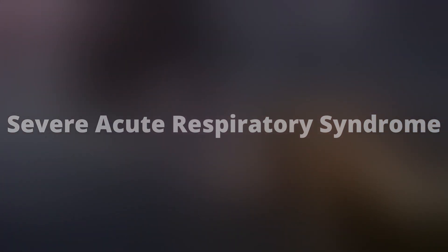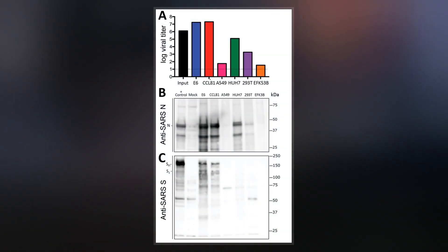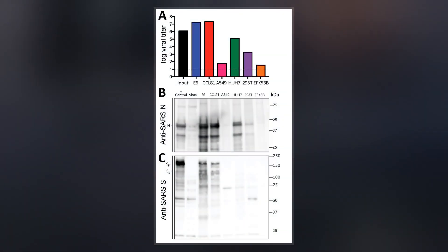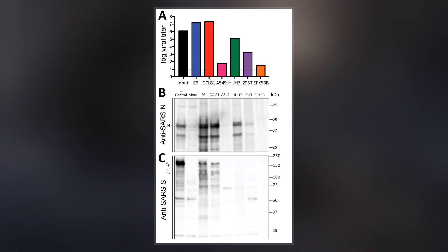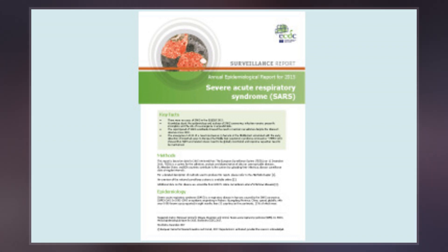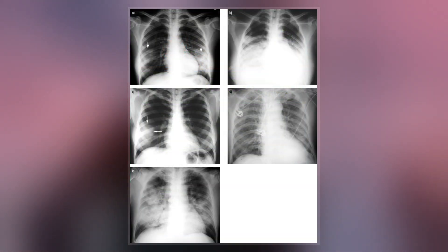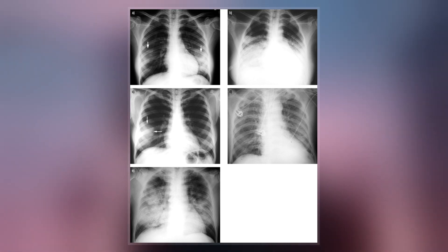Severe Acute Respiratory Syndrome is a viral respiratory disease of zoonotic origin that surfaced in the early 2000s, caused by the first identified strain of the SARS coronavirus. In late 2017, Chinese scientists traced the virus through the intermediary of civets to cave-dwelling horseshoe bats in Yunnan province. No cases of the first SARS-CoV have been reported worldwide since 2004.